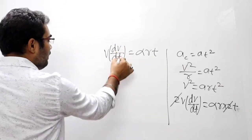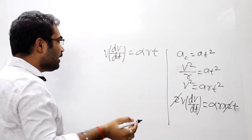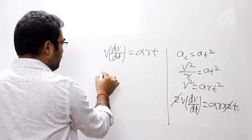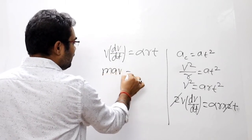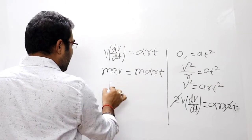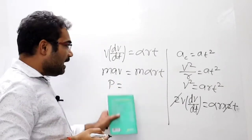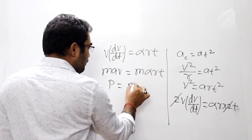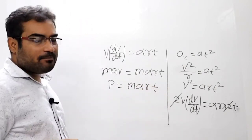Thik hai, dV by dt kya hai - acceleration hai. Yeh velocity hai. Mass se multiply kar dijiye: M A V, that is equal to M alpha R T. Thik hai, toh yeh ek tarike se instantaneous power aa gaya as a function of time: M alpha R T. Yeh instantaneous power aa gaya.